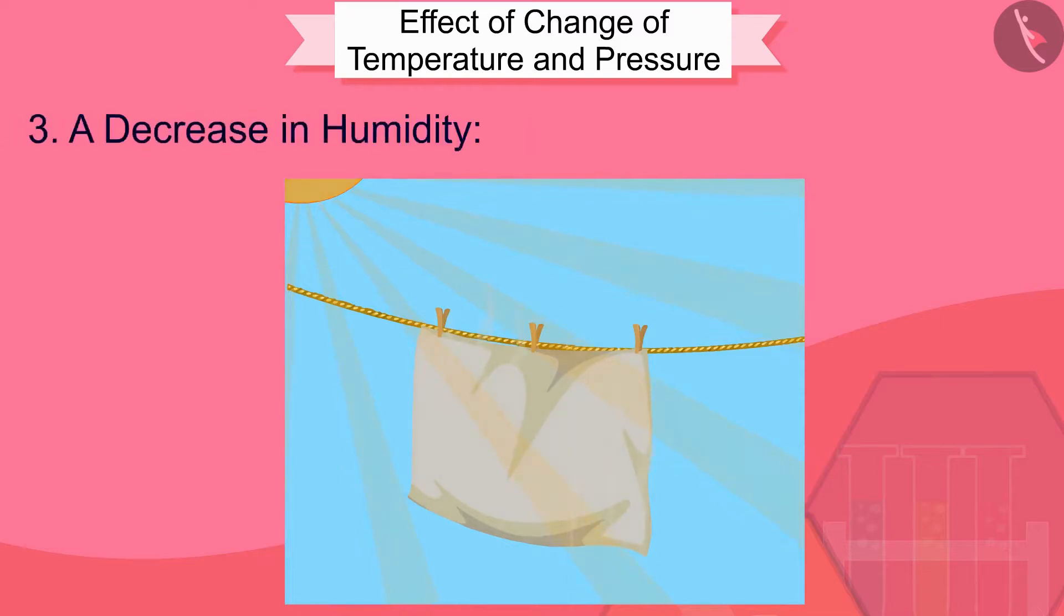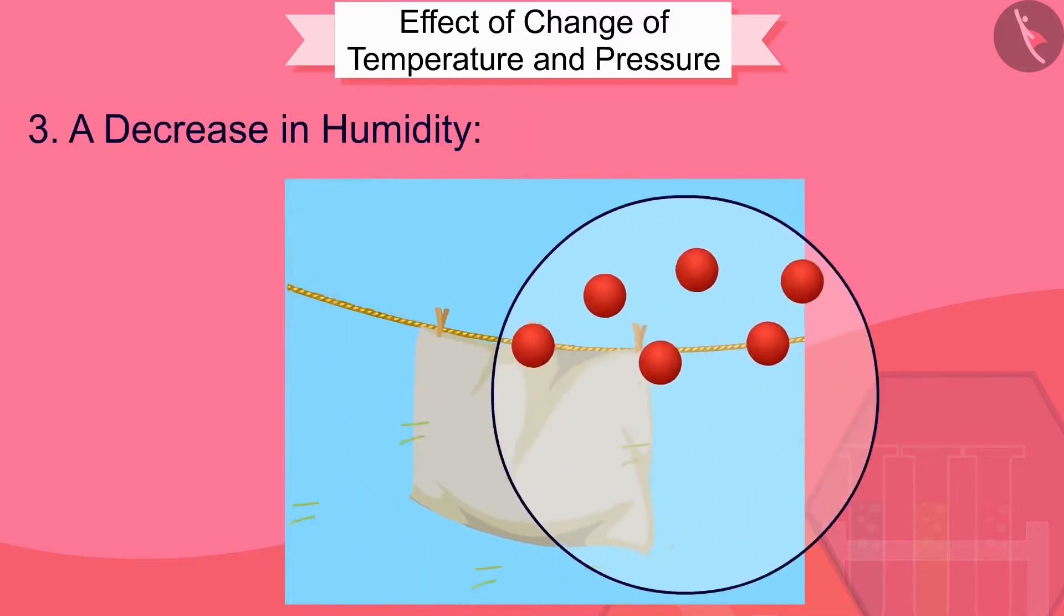A decrease in humidity. Humidity is the amount of water vapor present in air. The air around us cannot hold more than a definite amount of water vapor at a given temperature. If the amount of water in air is already high, the rate of evaporation decreases.